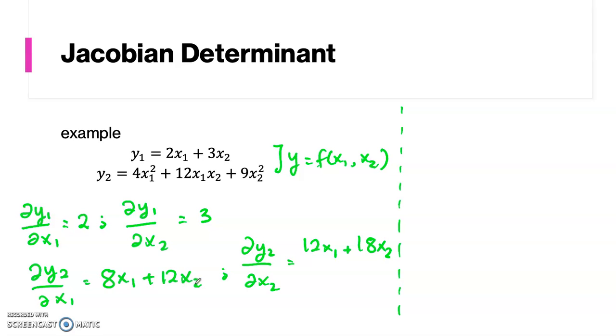Now, the next step is we arrange them into a square matrix, which is called a Jacobian matrix. This is the Jacobian matrix.